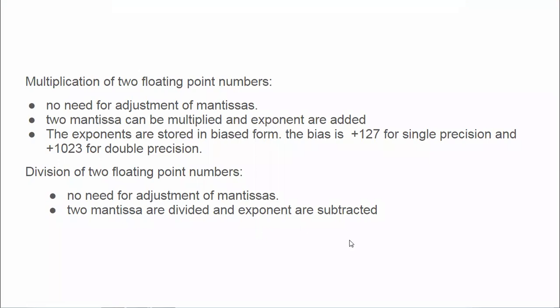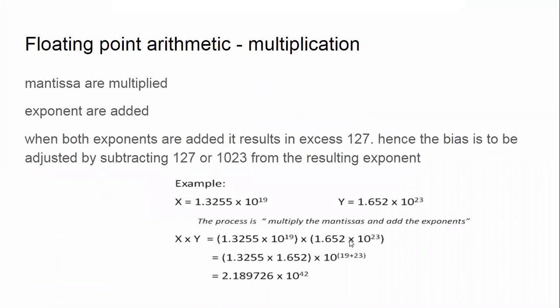Now we'll take a small example of multiplication. The rules are: mantissas are multiplied and exponents are added. When both exponents are added, it results in an excess-127 situation.